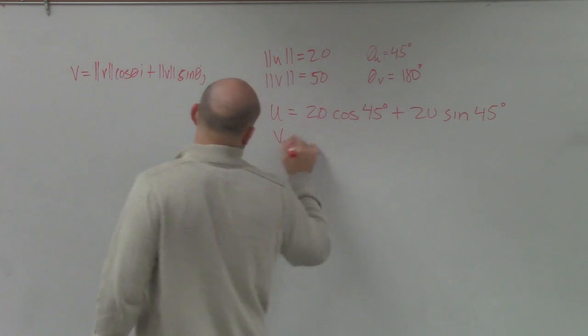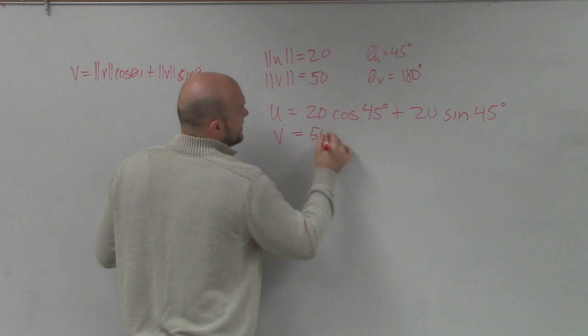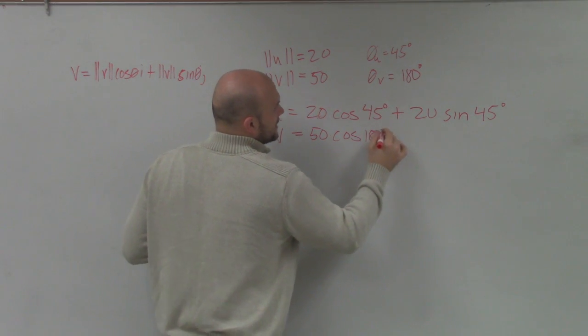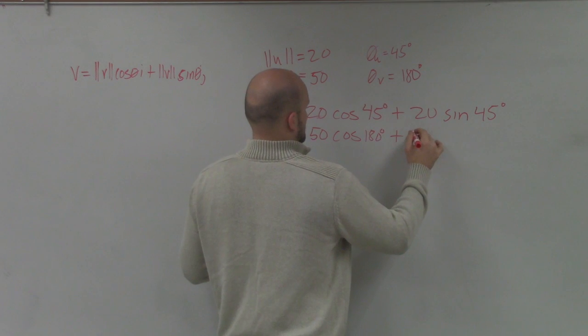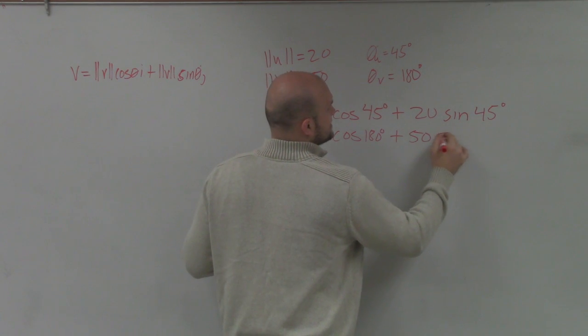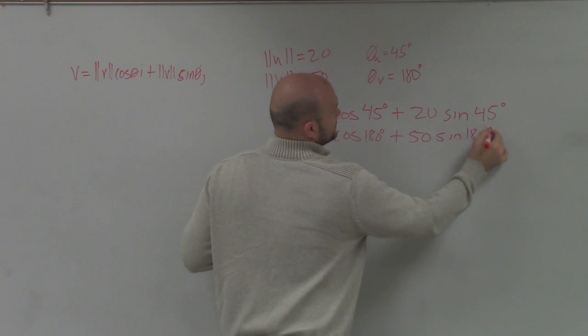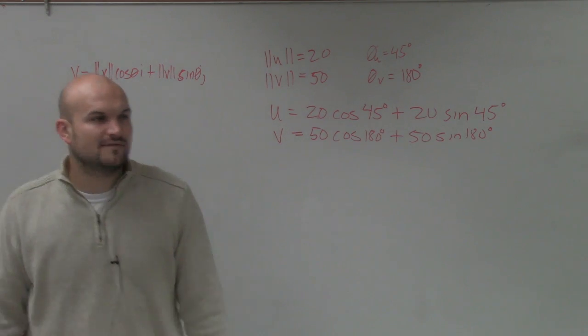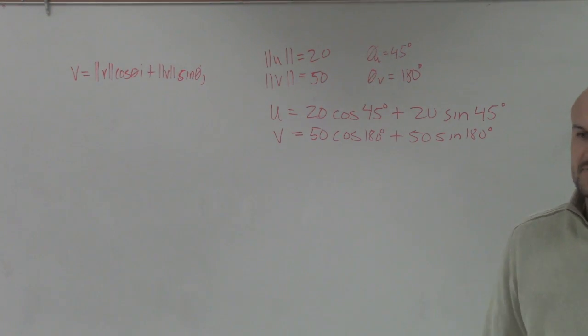And then let's write v in component form. v is going to be 50 times the cosine of 180 degrees, plus 50 times the sine of 180 degrees. Does anybody have any questions on this? Because this is how we set up our word problems last class period.